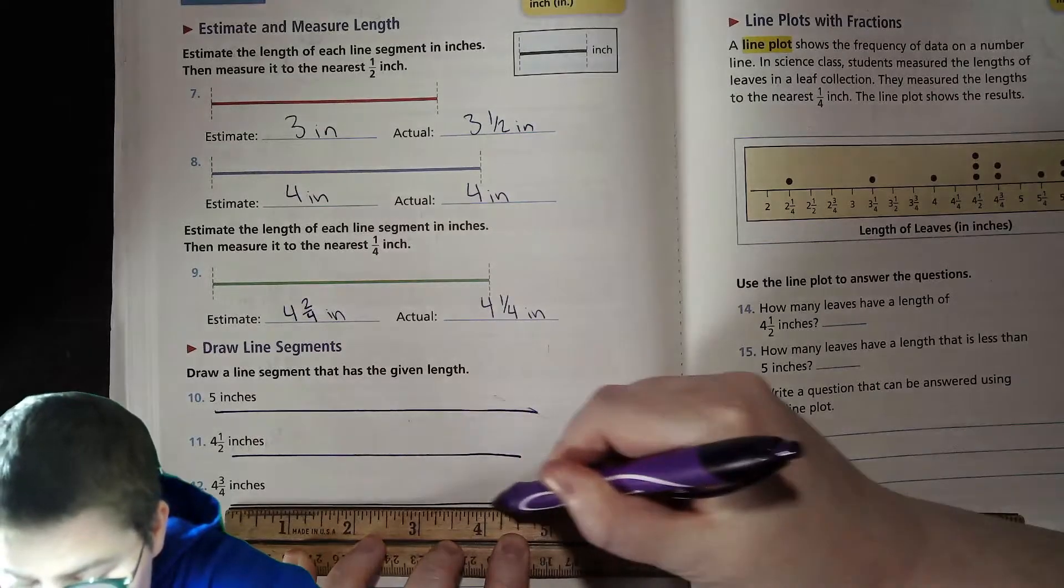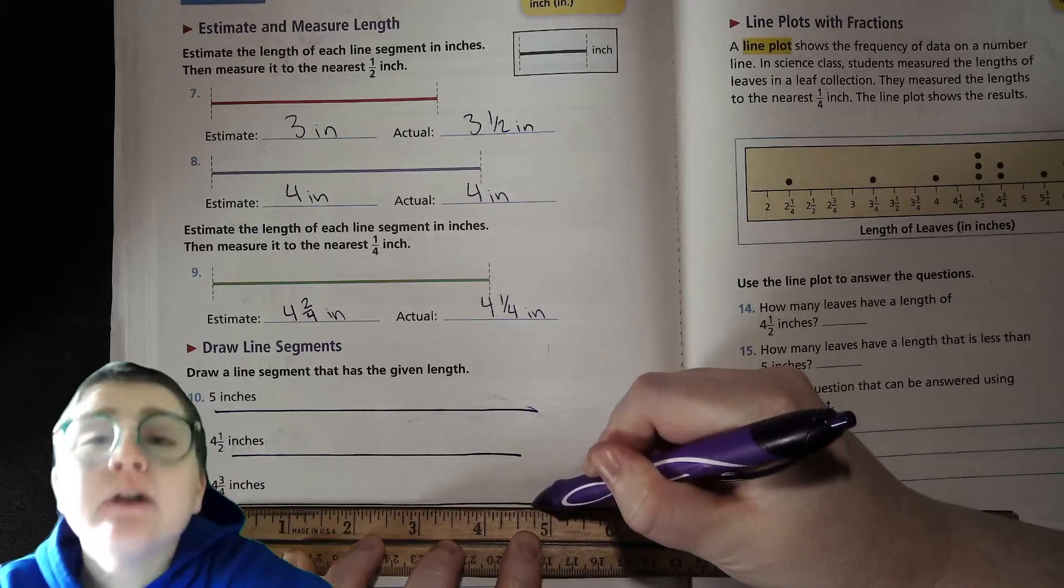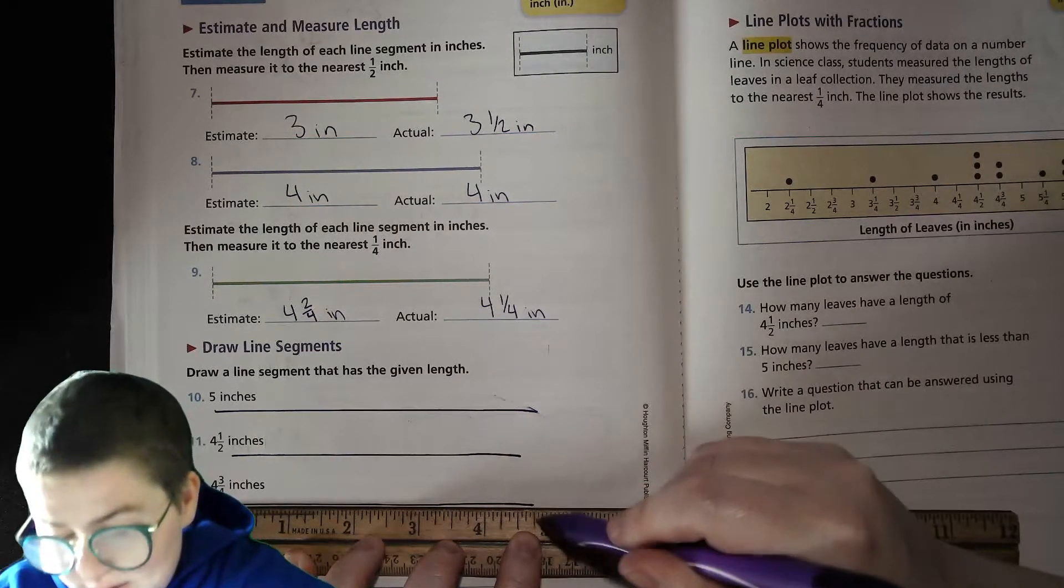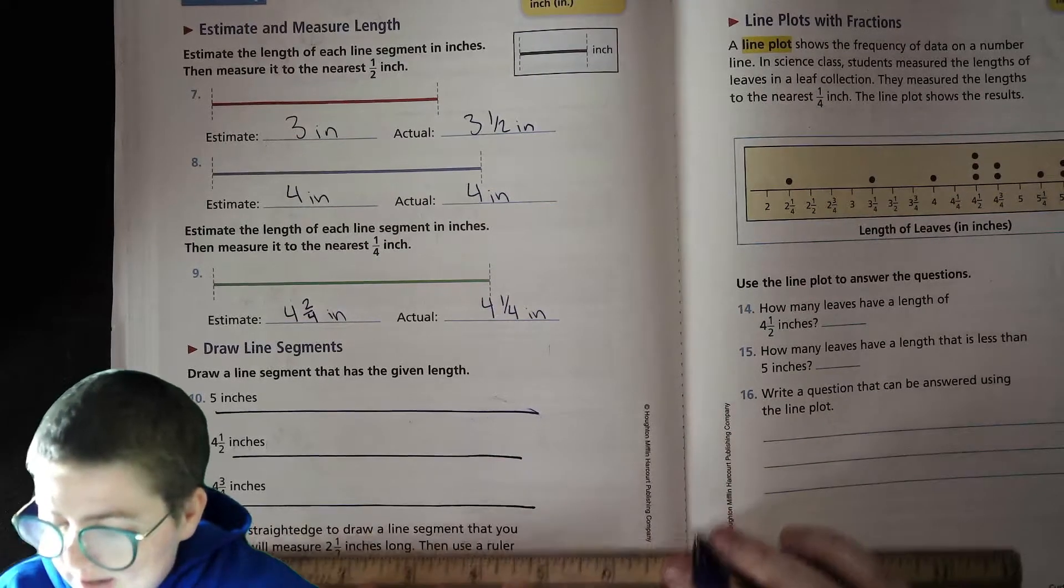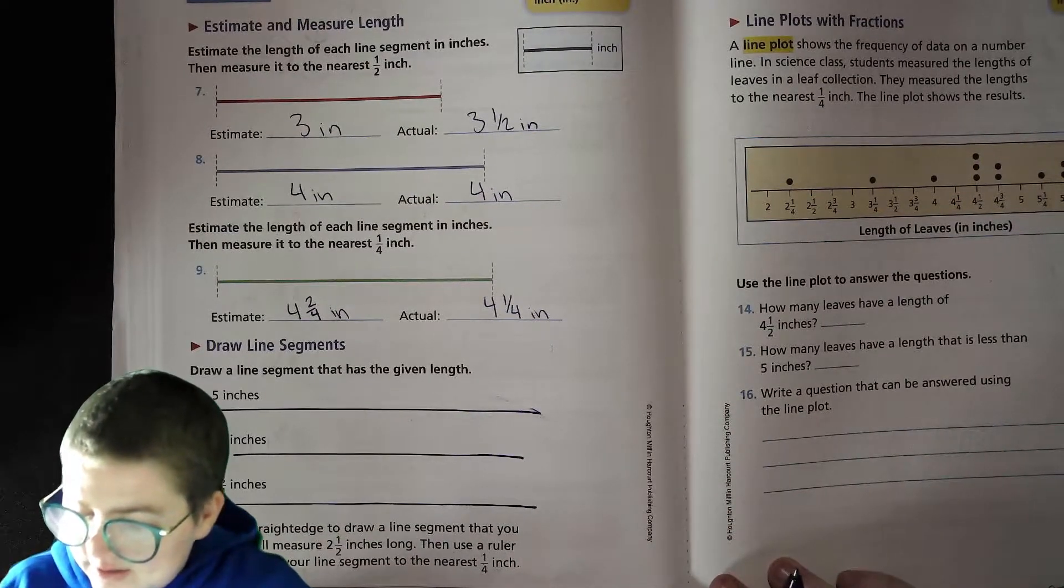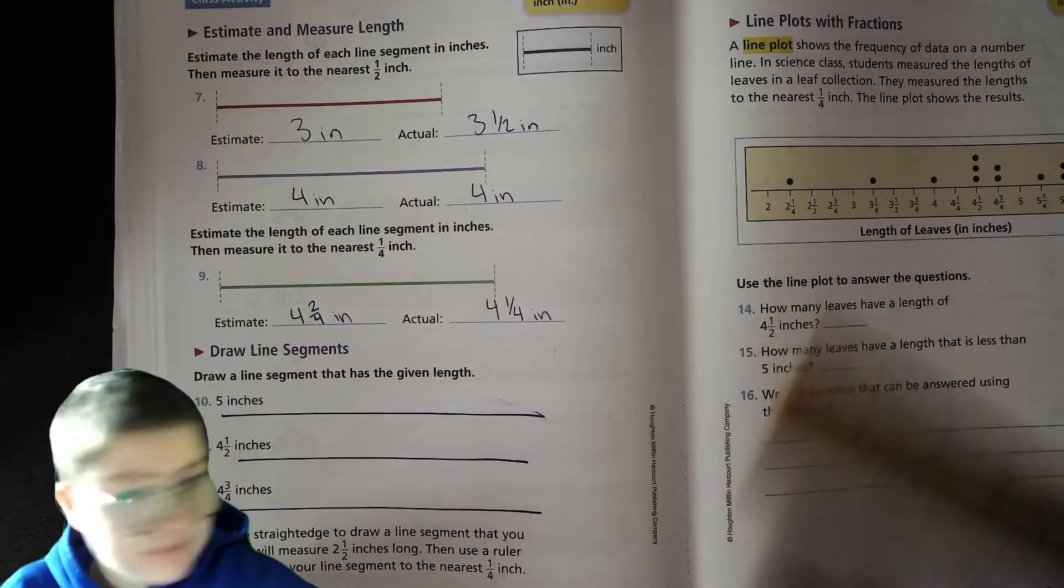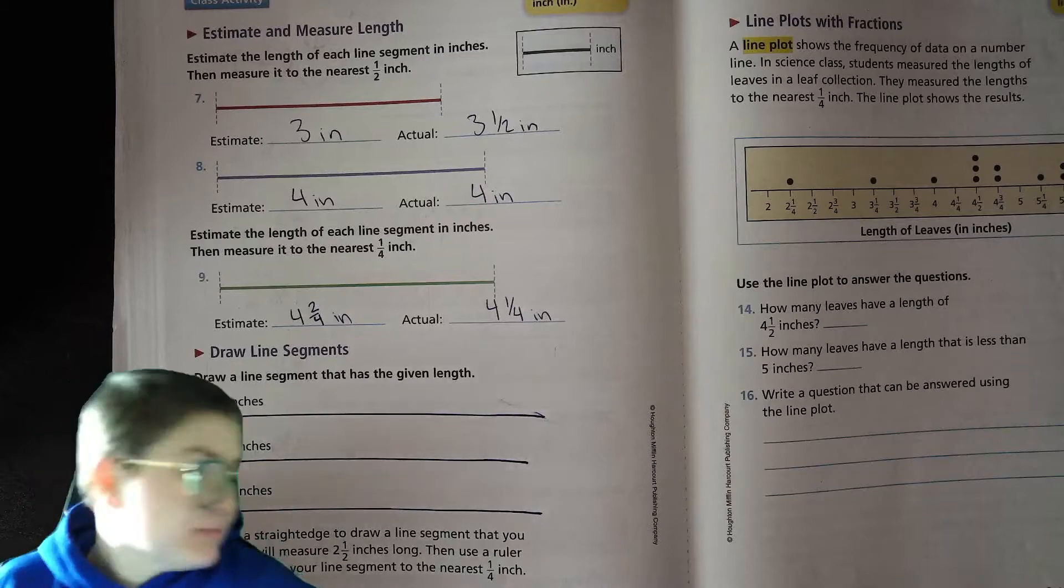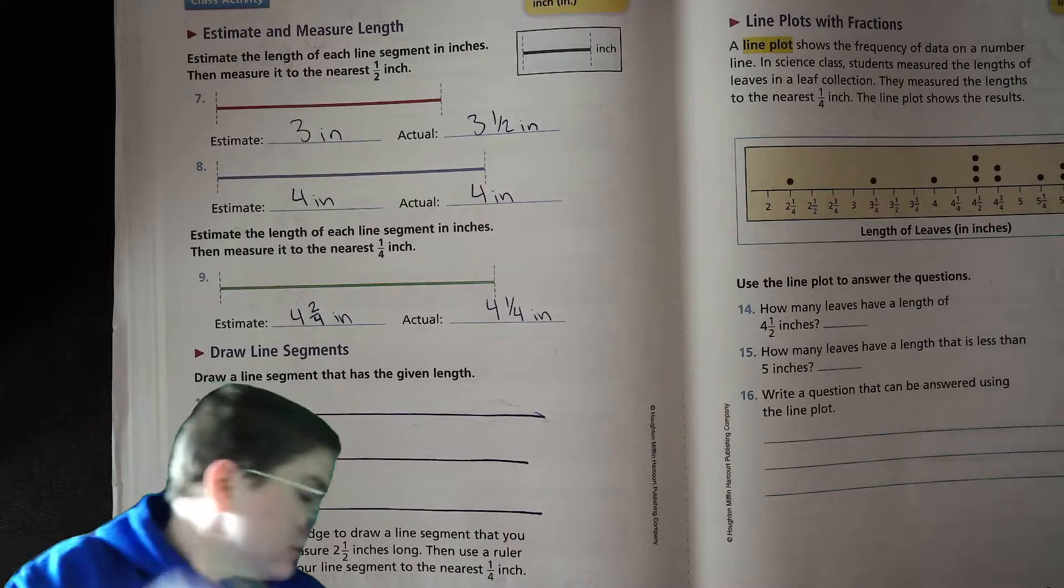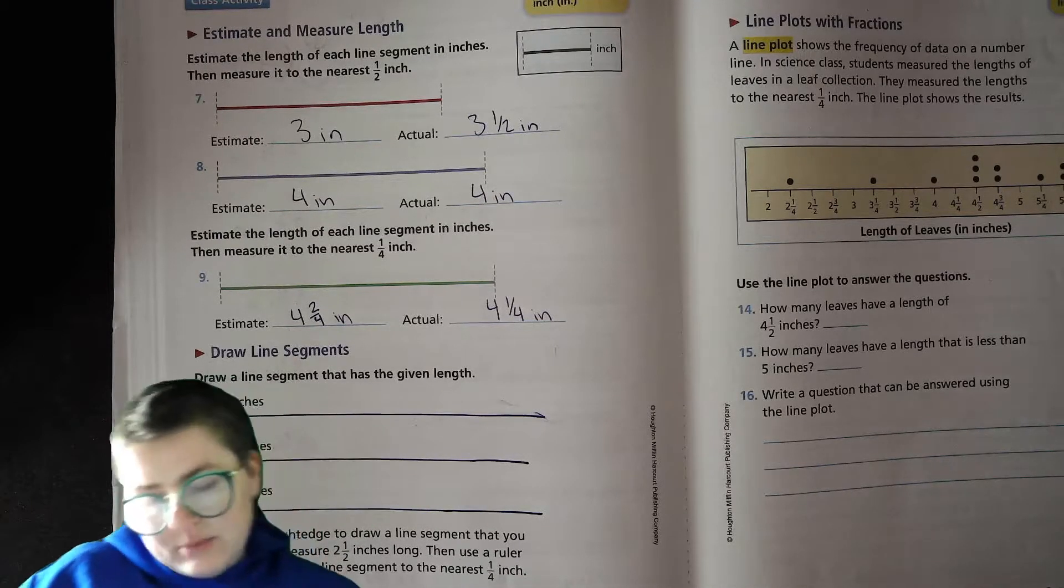All the way to this line here. You can see that this longer line, like that. Use a straight edge, draw a line segment that you would think would measure two and a half inches long, and use a ruler to measure the line segment. Oh sure. Let me just grab this other math book.